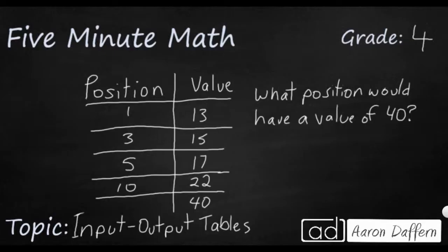And then the values move all the way up. And then we have a value of 40 at the very bottom. And the question might be, what position would have a value of 40? So we're looking for this missing number right down there.